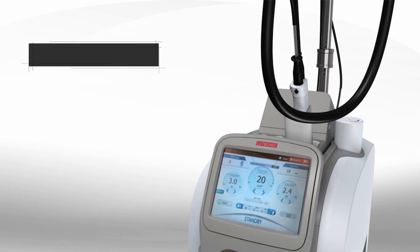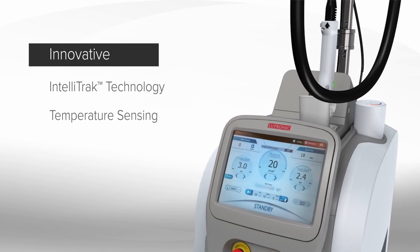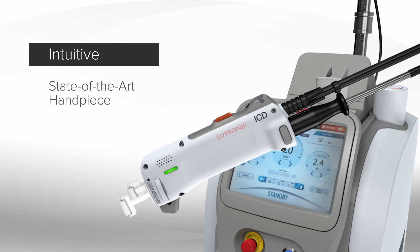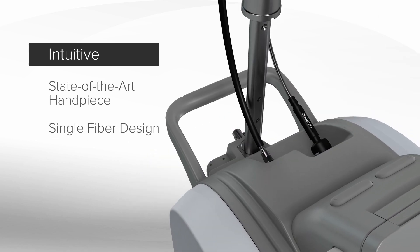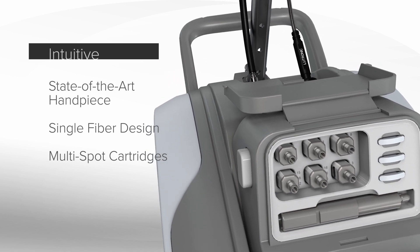Clarity 2 is innovative with its unique intelligent tracking and temperature sensing capability. It's intuitive with a state-of-the-art handpiece and single fiber design, supporting smart multi-spot cartridges ranging from 2 to 25 millimeters.